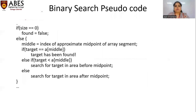In binary search, the pseudocode is: if size equals zero, there is no array and found is false. Otherwise, find the midpoint — the index of the approximate midpoint of the array segment. If the target equals a[middle], then the target has been found. Else if the target is less than a[middle], search for the target in the area before the midpoint; otherwise search for the target in the area after the midpoint.